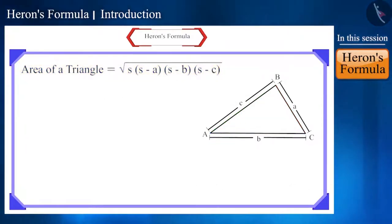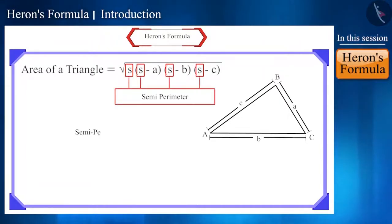Let's try to understand the given terms in Heron's formula. In this formula, s represents the semi-perimeter of the given triangle, whose value is obtained by dividing the perimeter of the triangle by 2.